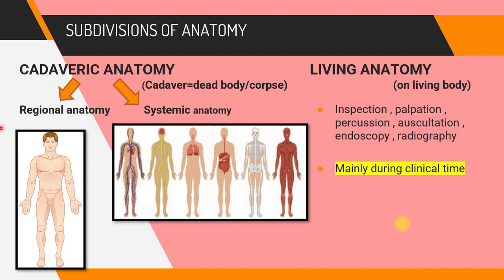Dissection can be carried out by two approaches. The regional approach includes head and neck, upper limbs, thorax, abdomen, and lower limbs — for example, cutting the limbs to study the bones, the muscles attached, the blood vessels, and the nerves. In the systemic approach you study an entire system, for example the gastrointestinal system, covering all its organs such as the intestines, stomach, and liver.